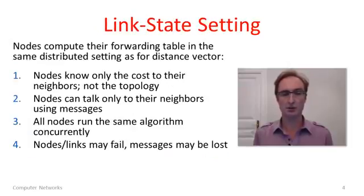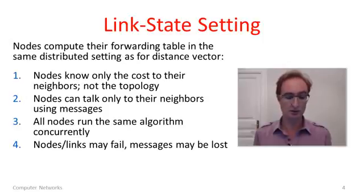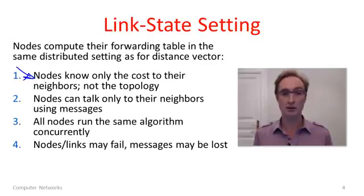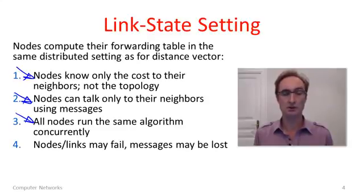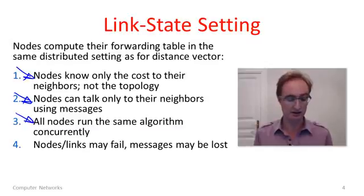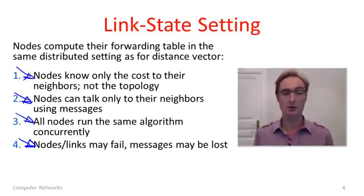Before diving into the details, let me remind you of the setting we're working in — the same as for distance vector. It's a distributed setting which makes routing more complicated than simply computing things centrally. Nodes only know about their neighbors and the cost to those neighbors; they don't know the whole topology when turned on. They can only talk to neighbors using messages to find out what's happening. All nodes run the same algorithm concurrently with no centralized controller, operating in parallel and dealing with failed components and lost messages.